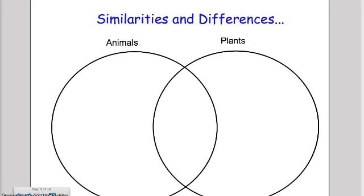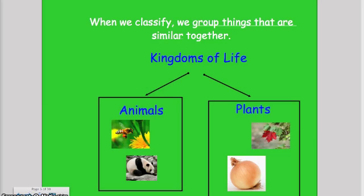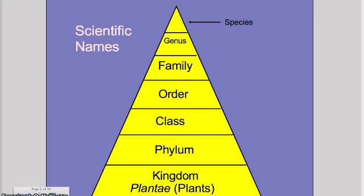Next I had students compare the similarities and differences of animals and plants through a Venn diagram, associating language with what they already know. Here is a diagram of the different kingdoms of life, with animals and plants shown with visuals as well as words.